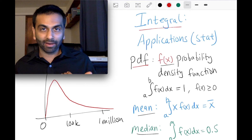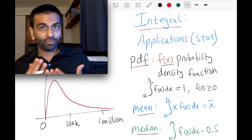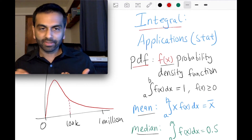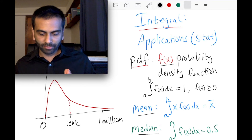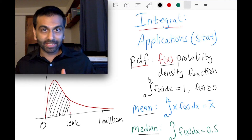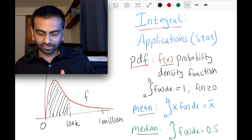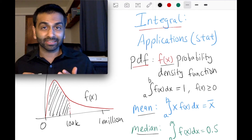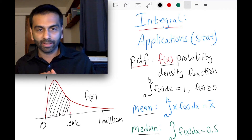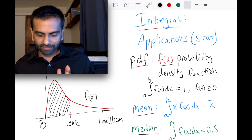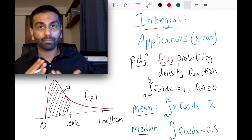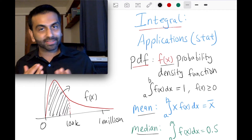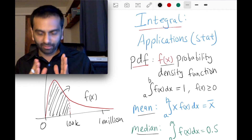If we wanted to figure out what proportion of all incomes were less than $100,000, the way we would do it using integrals is we would take the integral of this function from 0 to $100,000, which gives us the area underneath that PDF function — also denoted f(x). The integral from one x value to another gives you a number between 0 and 1, which is the proportion of all the data that falls in that range.